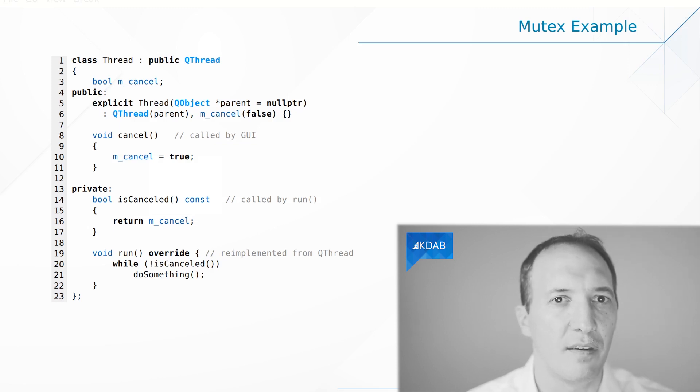So we can do this like in this sample code here where you can see that we use a boolean as a member variable initialized to false. And then when we want to ask the thread to finish, so we call this from another thread like the GUI thread, we simply set it to true. And we'll say in the thread implementation, while the boolean is false do something. So we regularly check for it, and you can see here that the method we use for that, isCancelled, simply reads from the boolean.